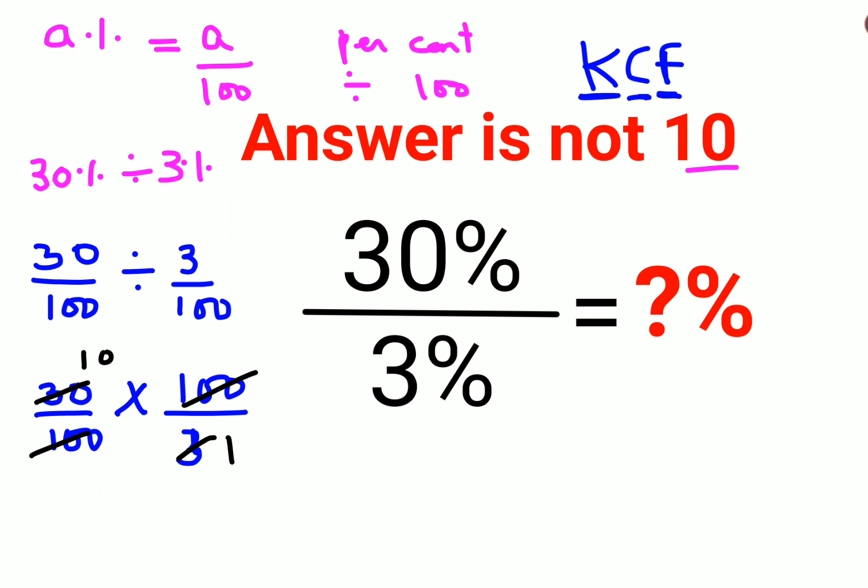But since here they are asking you to find the answer in terms of percentage, see, when you wanted to convert the percent into a number, you divided by 100. So now if you want to convert the number into percent, you need to multiply by 100. So your answer, which is 10, gets multiplied by 100.